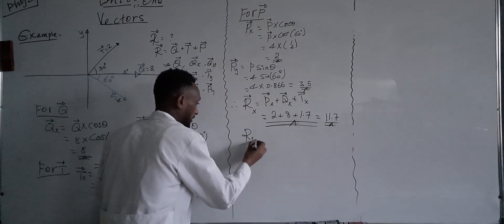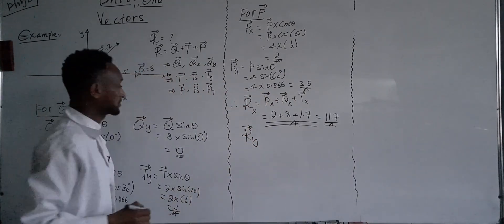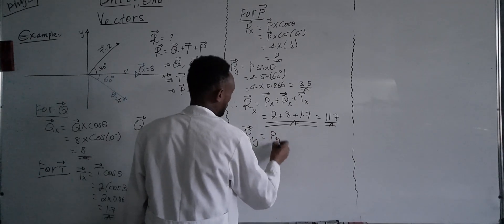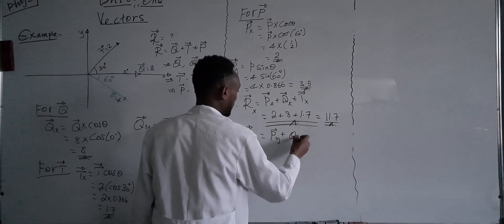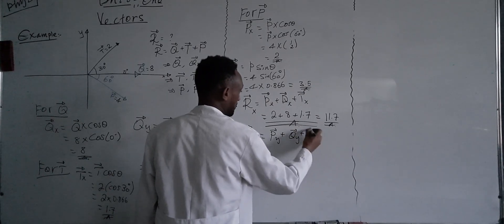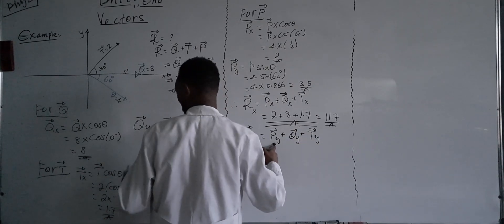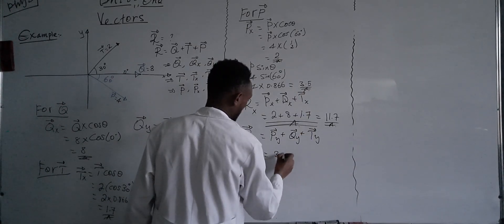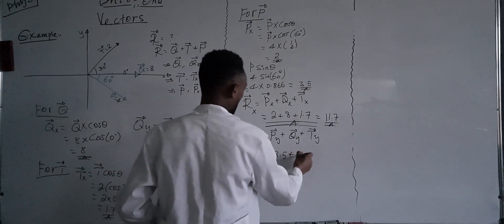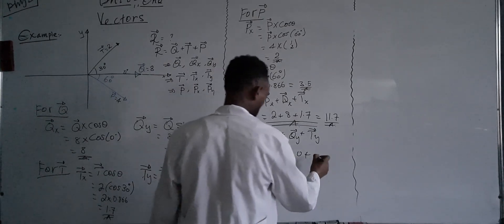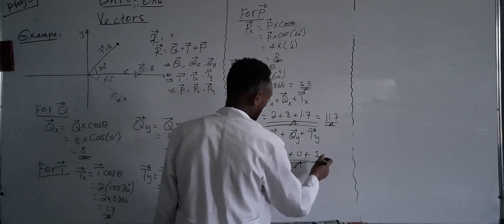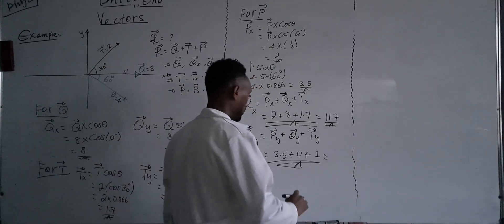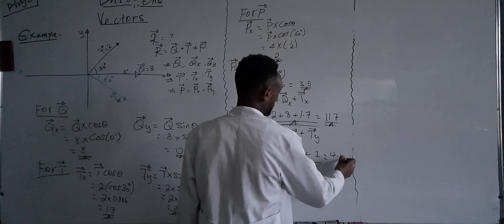The resultant y component of these three vectors is Py in the y component plus Ty in the y component plus Qy. That is 3.5 plus Qy which is zero, plus Ty which is 1. The resultant vertical component is 4.5.